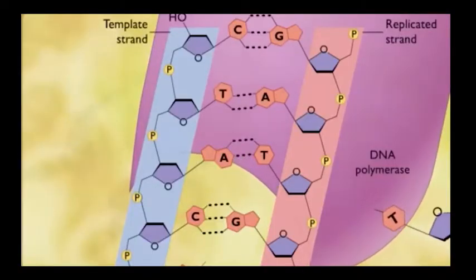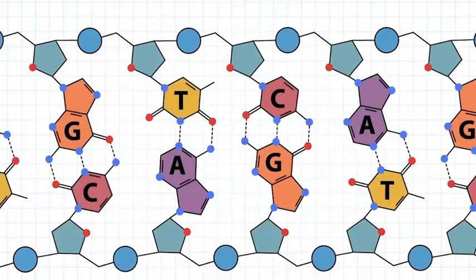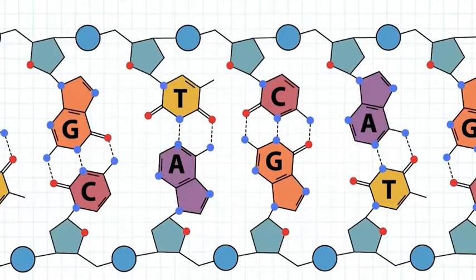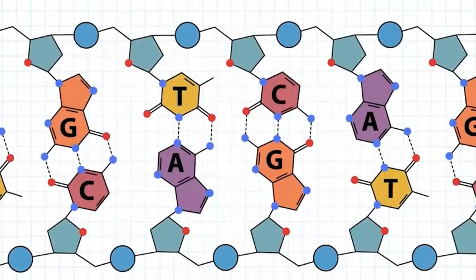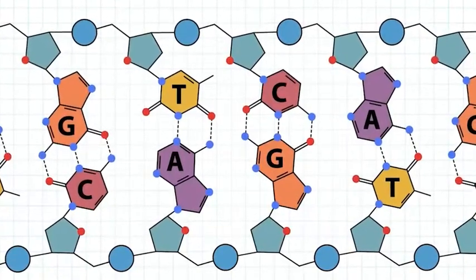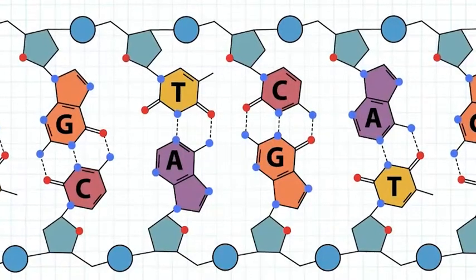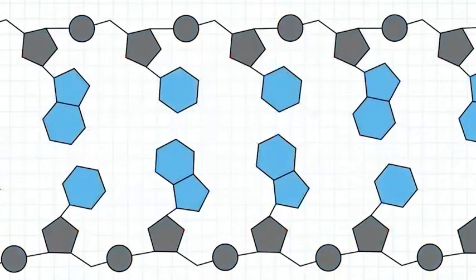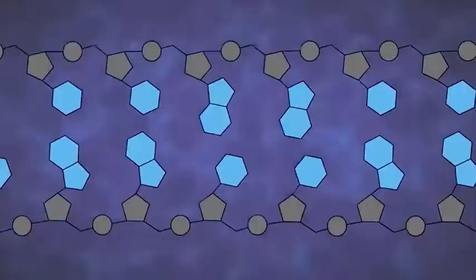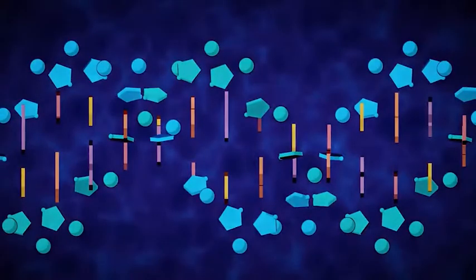With the help of the enzyme DNA polymerase, nucleotides line up according to the rules of base pairing. Cytosines line up next to guanines, and guanines line up next to cytosines. Adenines line up next to thymines, and thymines line up next to adenines.